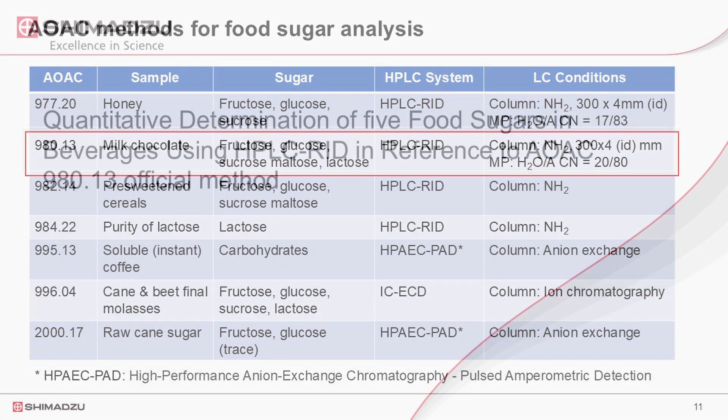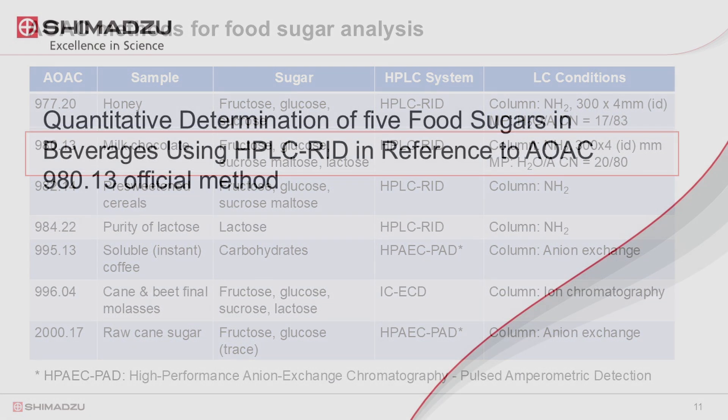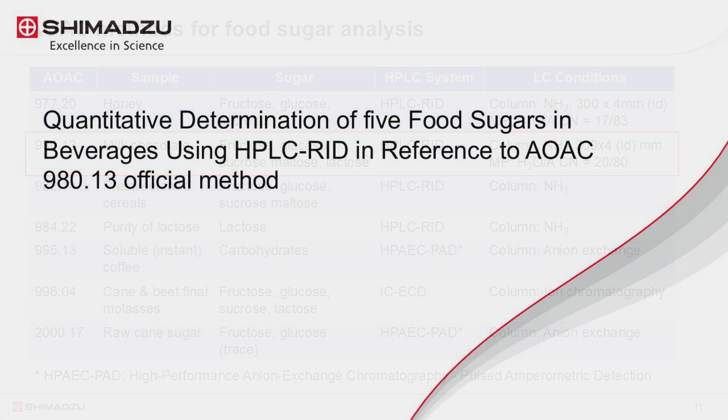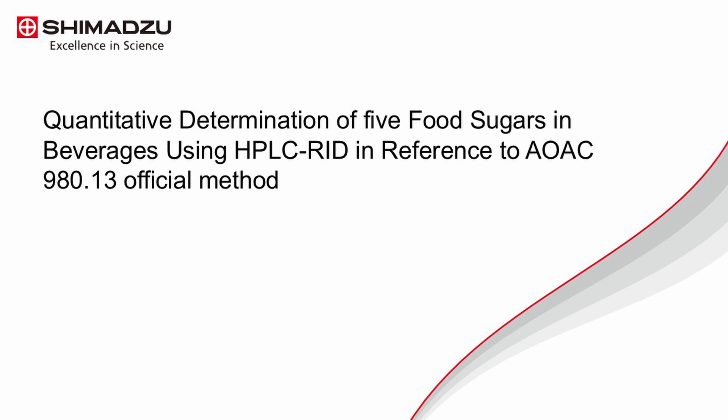Now, let's demonstrate an HPLC RID method for analysis of five food sugars in beverage samples. This method is in reference to the AOAC 980.13 official method.